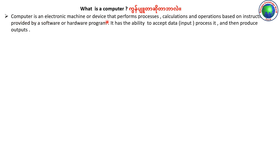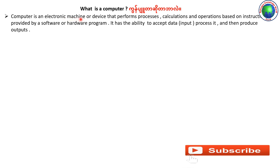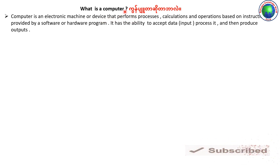Computer is an electronic machine or device. It performs processes and operations. It is based on instructions provided by a software or hardware program.